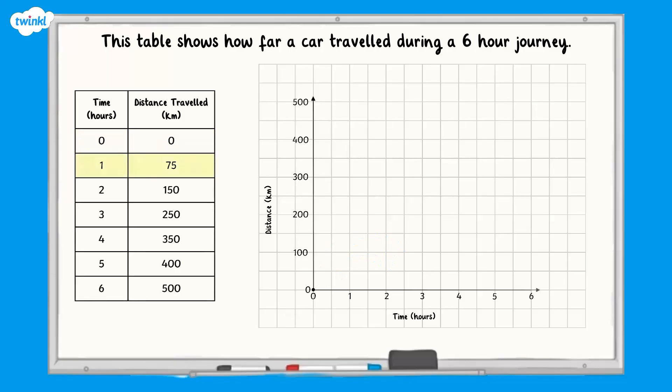At 1 hour, the car had travelled 75 kilometers. There is no line to represent 75 kilometers, so we need to use the scale to work out where the point will go.